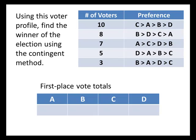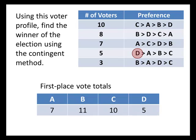Let's go back and see what we can do with this profile. We need to figure out how many first place votes each candidate got. A has seven first place votes — those seven voters in the highlighted row all voted for A as their top choice. B has two different groups: eight voters in the second row and three more at the bottom, adding up to 11 total first place votes. C has 10 first place votes and D has five.